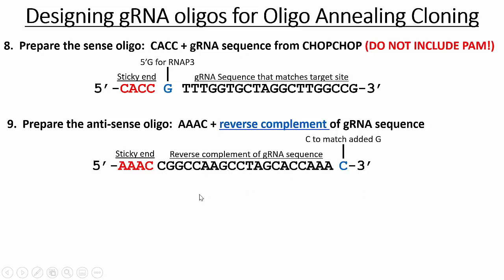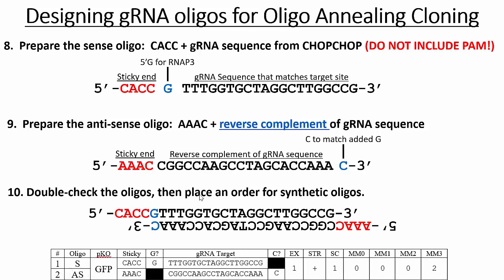Once you've got those oligos designed, I would highly suggest you put them into PowerPoint and flip them around just to make sure they bind to one another — to convince yourself that these gRNA oligos will actually form a duplex. You can see C binding to G, with the CACC and CAA overhangs still single-stranded. And that's exactly what you order. For just a few dollars in a few days, there are many companies that will ship those oligos right back to you, and then you can clone them into the plasmid. Please let me know if you have any questions on this process, or if you'd like me to take a look at your gRNAs to double-check them.